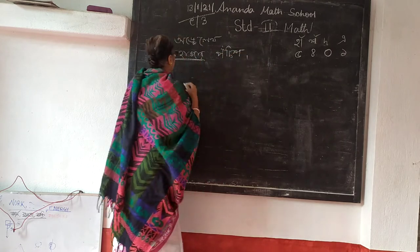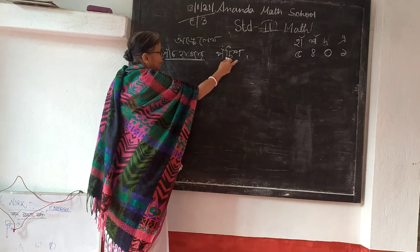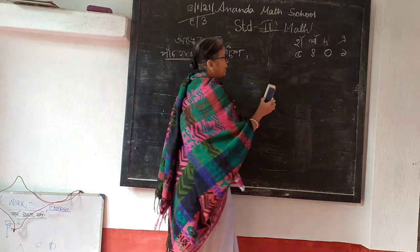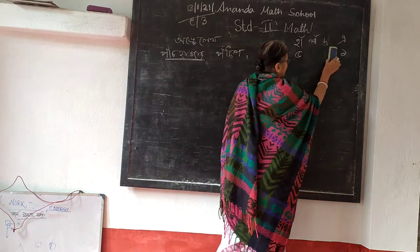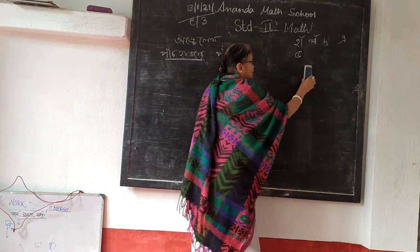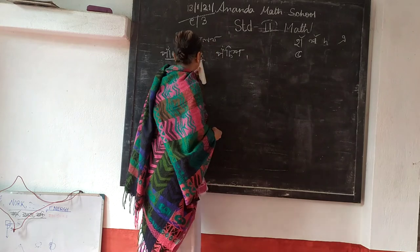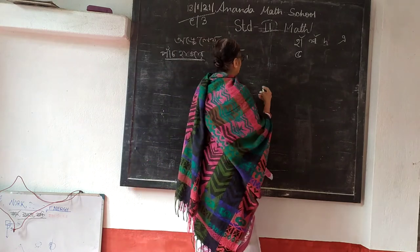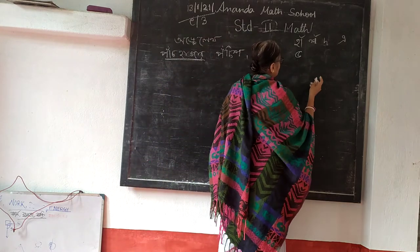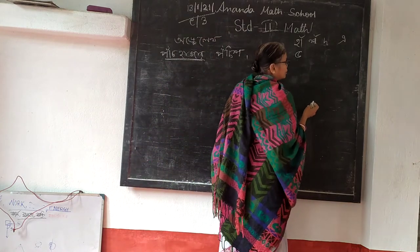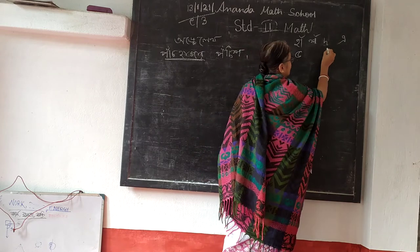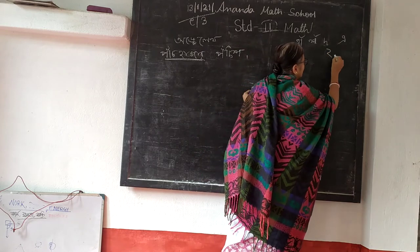5,000, 5,000 to 6,000. What do you do? 5,000.